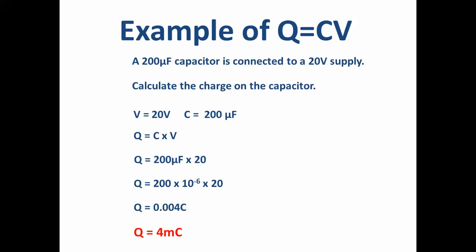You need to be able to calculate charge on a capacitor. The charge Q is C times V. So this is an example from the previous video. There's our formula, Q equals C times V. You need to be able to take into account the micro. So we've got 200 microfarads there, which is times 10 to the minus 6. You need to be able to change this figure, 0.004, into the nearest scientific notation. So it's milli. That's 4 millicoulombs.